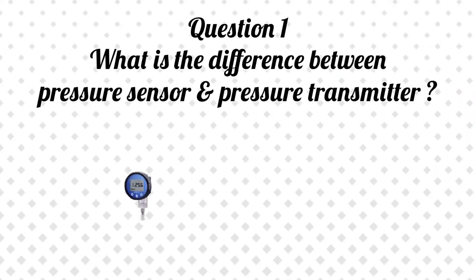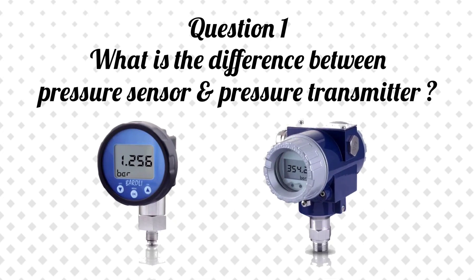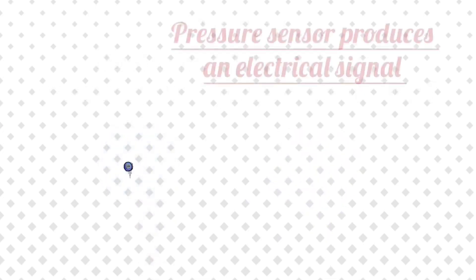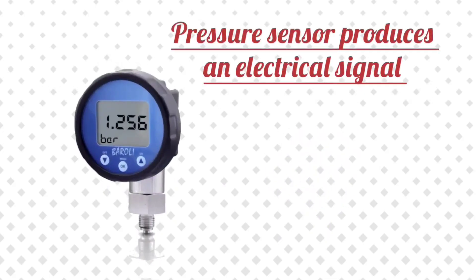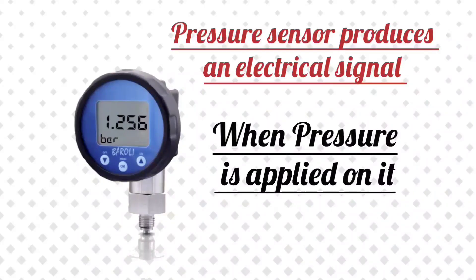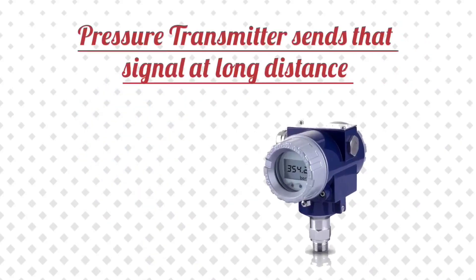Question 1: What is the difference between a pressure sensor and a pressure transmitter? Answer: A pressure sensor produces an electrical signal when pressure is applied on it, whereas a pressure transmitter sends that signal over a long distance.